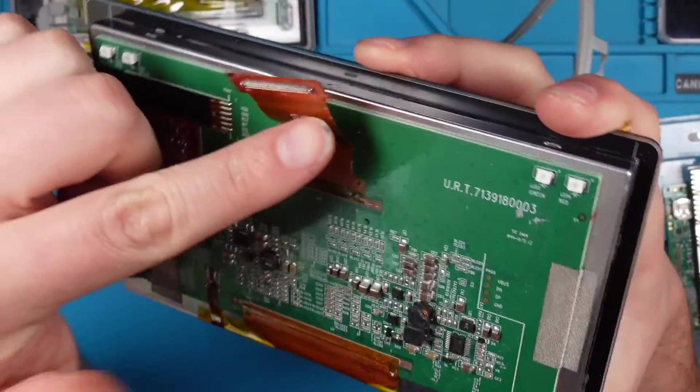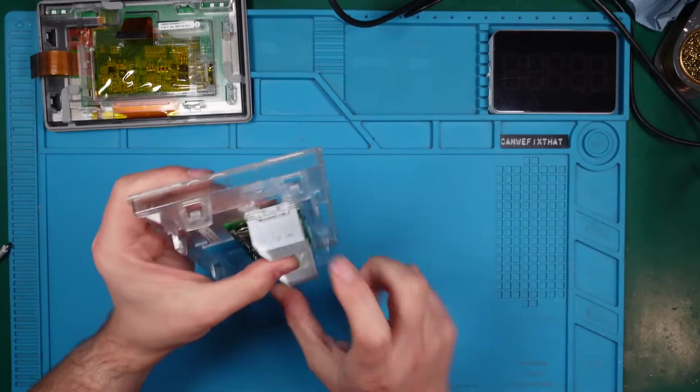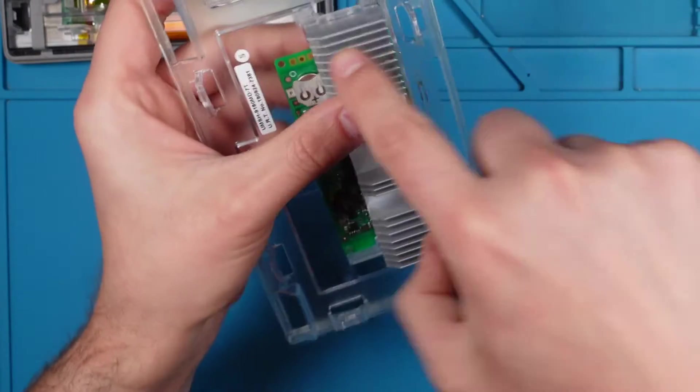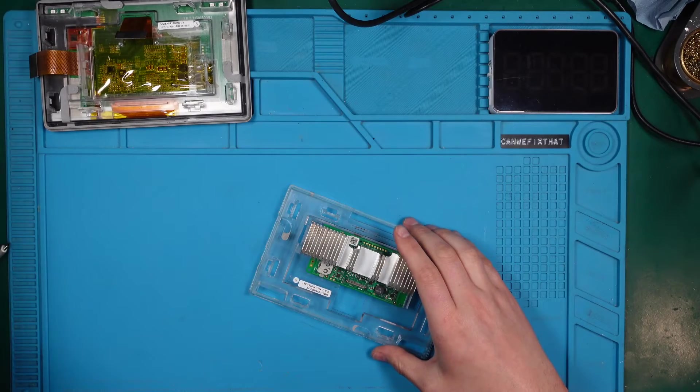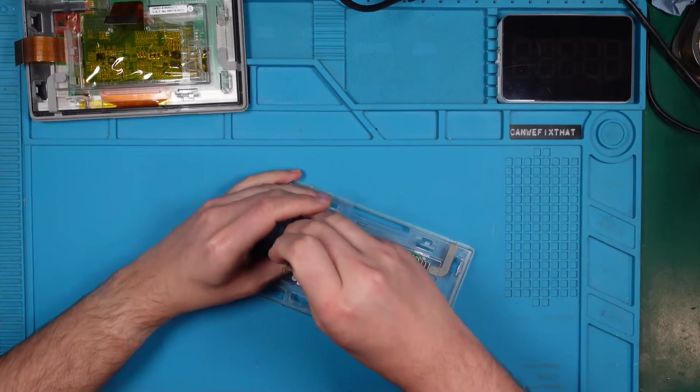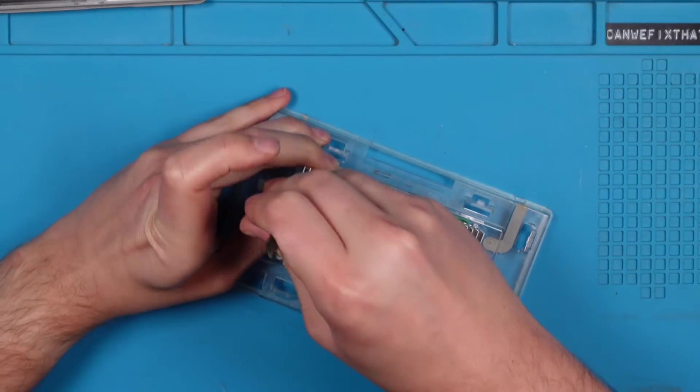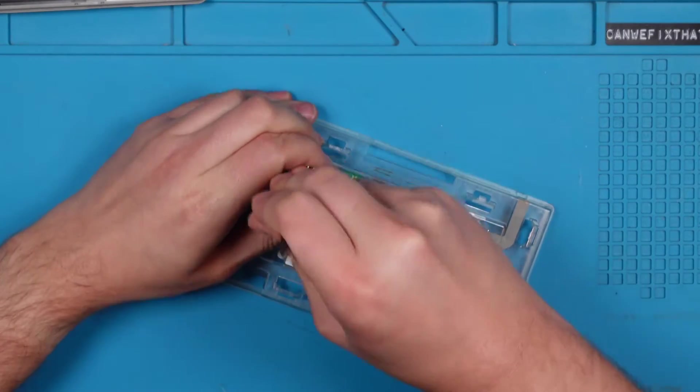To install the new screen, we need the motherboard from our Thermomix TM6, which is actually the brain of the device. It sits on top of the unit and is directly connected to the screen with a ribbon cable. It's held down with a plastic clip. To release it, I use a spudger.